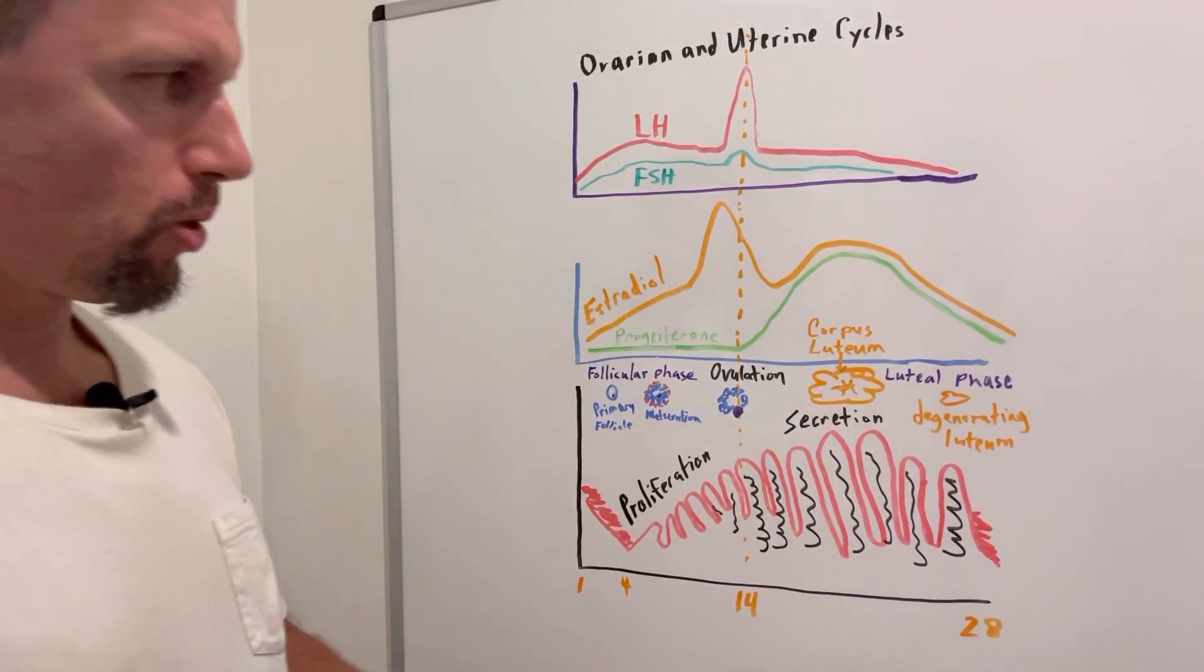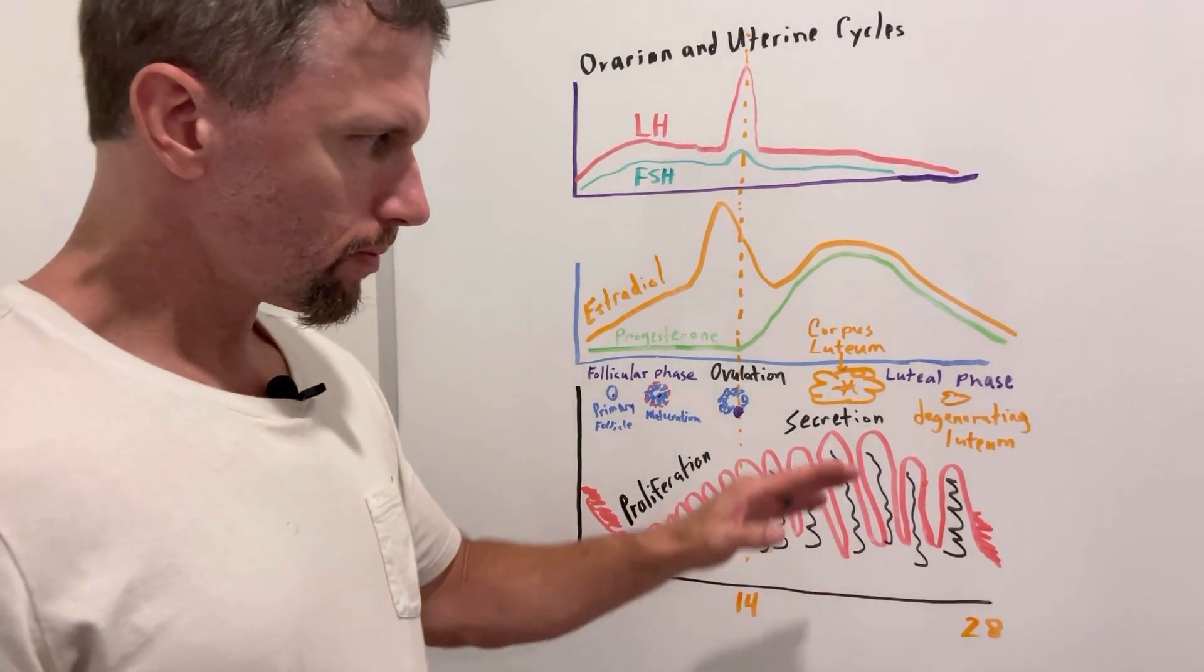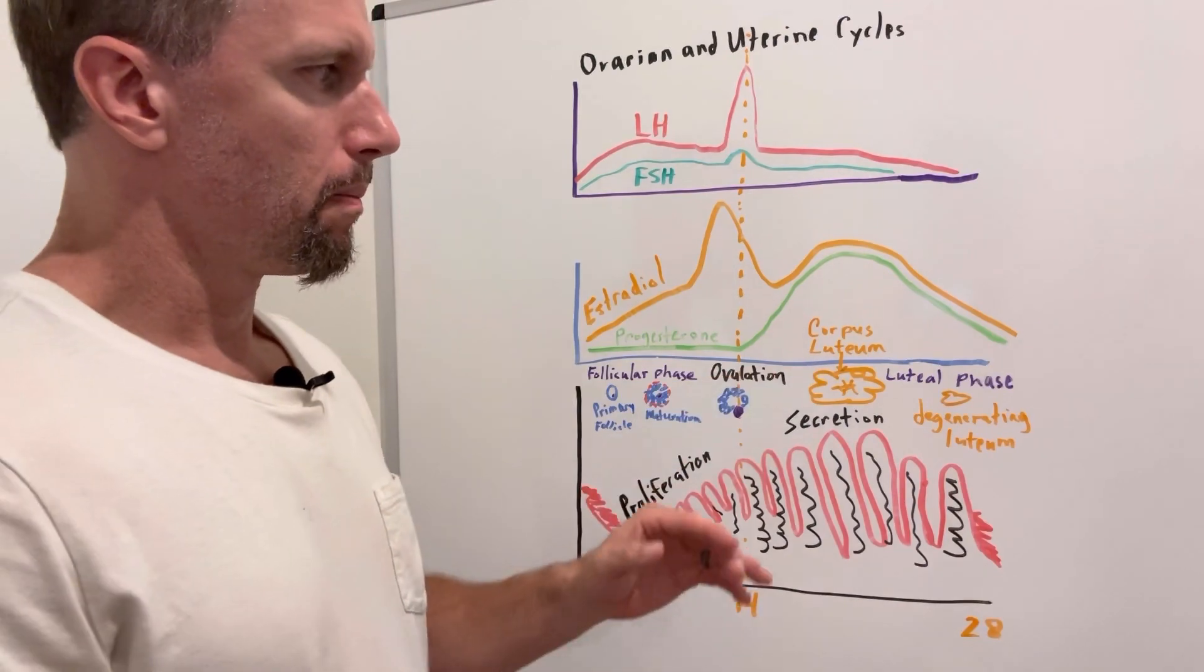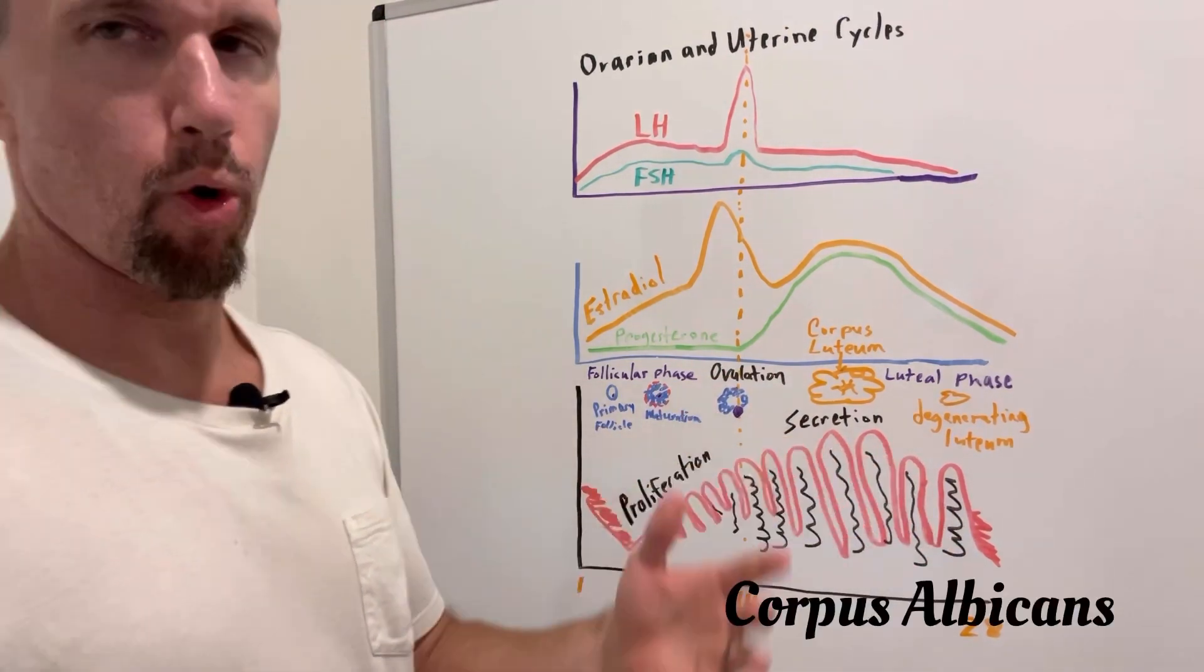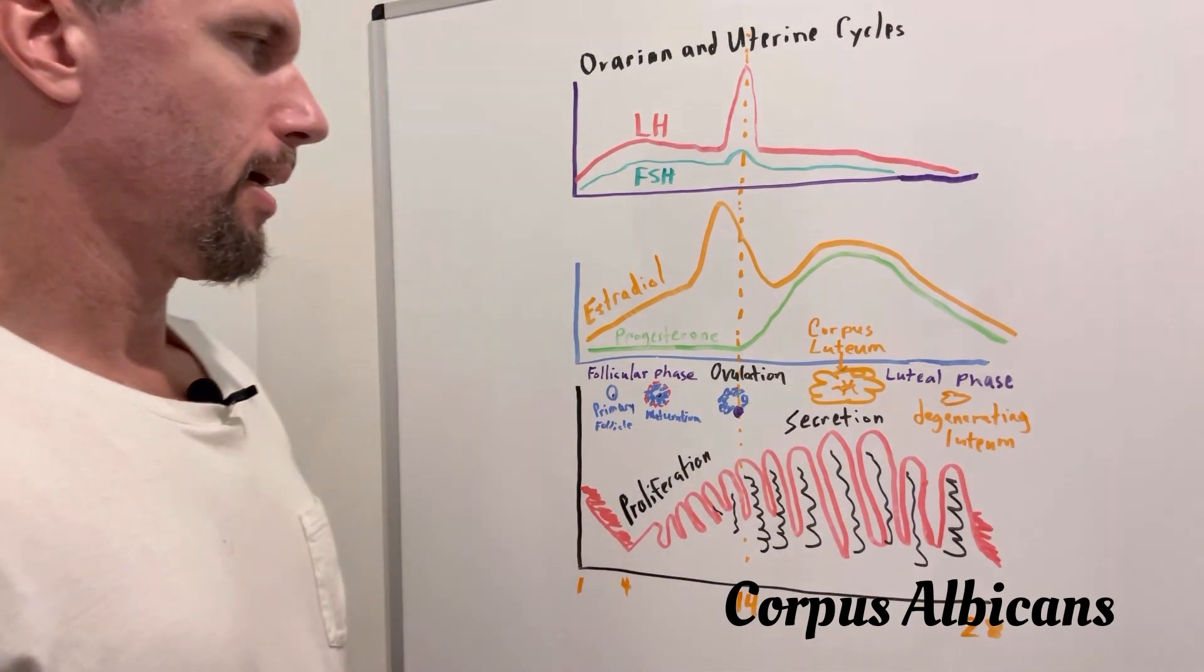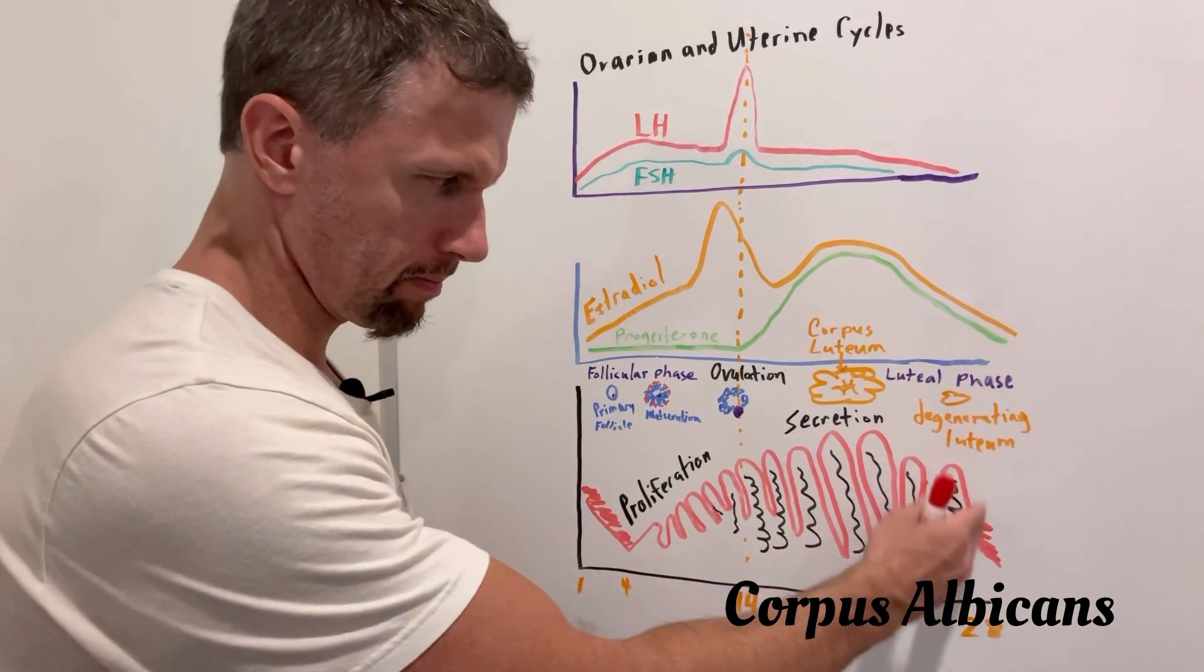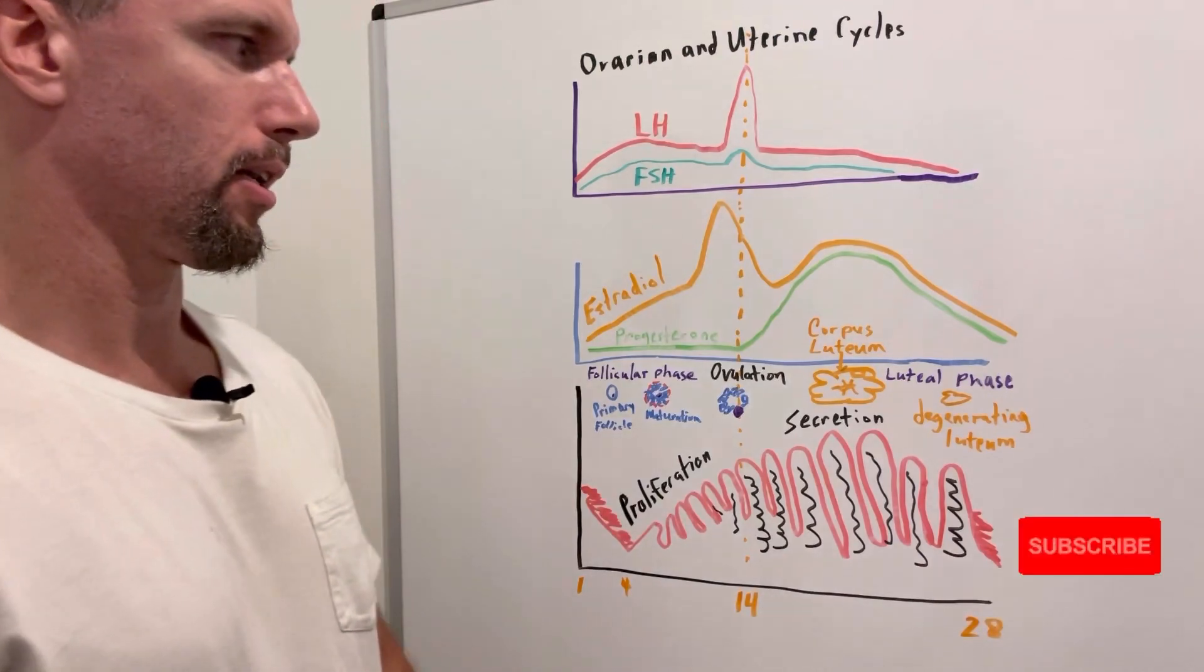If there's no fertilization event, this corpus luteum will kind of die out and degenerate, and it becomes what's called corpus albicans. And then you start the menses and you start the cycle all over again.